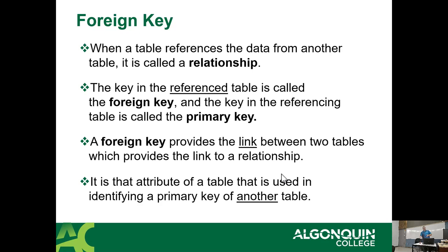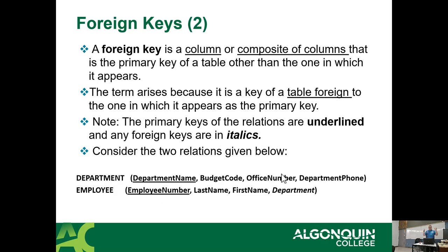The foreign key provides a link between two tables. It's an attribute of a table used to identify the primary key of another table. In a class registration, the student number is a foreign value because it's actually being defined by something else outside of itself. That's why it's called a foreign key — the value is being defined by something else. Therefore it's foreign to itself.